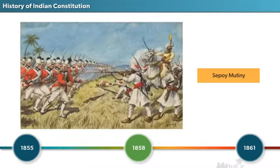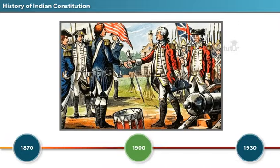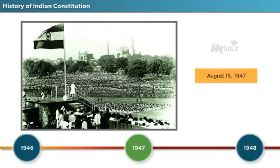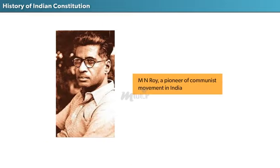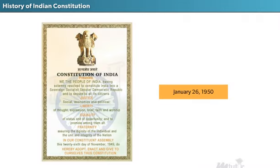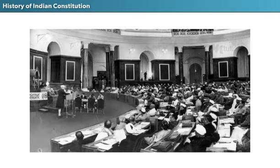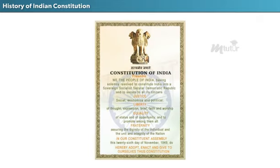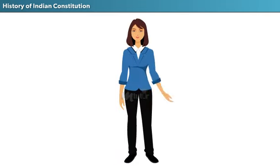Later, in 1858, in the wake of the Sepoy Mutiny, the British Crown assumed direct responsibility for the governance of India. Their rule continued until India was granted independence on August 15, 1947. With independence came the need for a Constitution. As suggested by M. N. Roy, a pioneer of the communist movement in India, a Constituent Assembly was formed, and on January 26, 1950, the Constitution came into being. Although the Constitution was created by the people of India, various features have their roots in British rule. Let's see those events in chronological order.